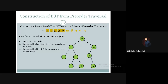Since 8 has no smaller element, 8 has no left subtree child. Element 9 is greater than 8, so 9 is inserted as the right subtree of 8. We are done forming the left subtree of node 10. Now for the right subtree of 10, 12 will be the root.